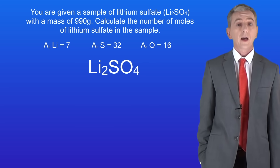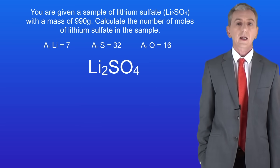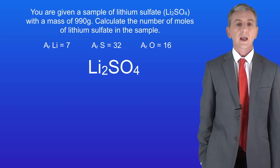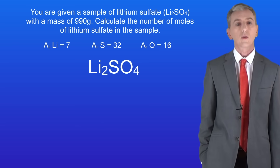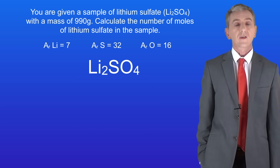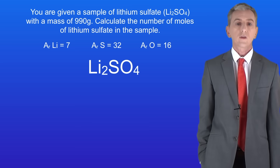Here's another one for you to try. You're given a sample of lithium sulfate with a mass of 990 grams. Calculate the number of moles of lithium sulfate in the sample. The formula of lithium sulfate is Li2SO4. The relative atomic mass of lithium is 7, the relative atomic mass of sulfur is 32, and the relative atomic mass of oxygen is 16. Pause the video now and try this yourself.